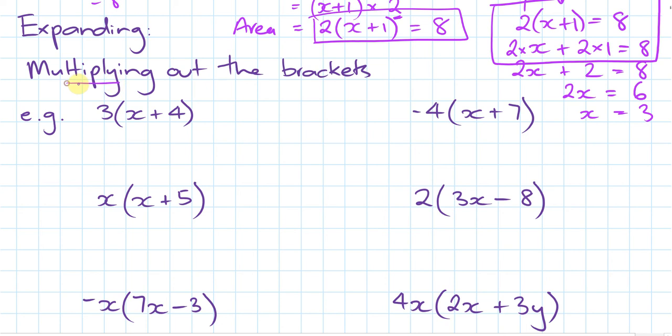It just means to multiply out the brackets. So this first example, I've got 3 times (x+4) in brackets. So that 3 is multiplying everything inside the brackets. So start off with 3 times x plus 3 times 4. That will give me, if I simplify, 3x plus 12. So this is my final expression. That is the expanded expression.